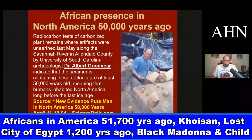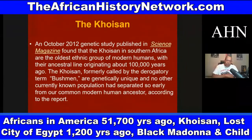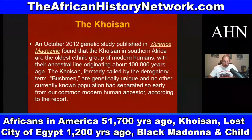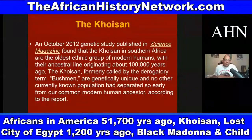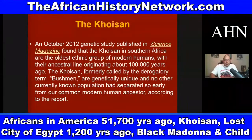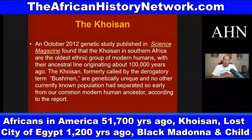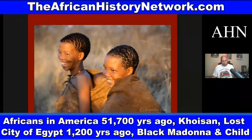These humans are the Khoisan. The Khoisan have the oldest DNA on the planet. They are ancestors related to the Twa — short-statured Africans who went all around the world and were here in the land we call the United States. In October 2012, a genetic study published in Science Magazine found that the Khoisan of Southern Africa are the oldest ethnic group of modern humans, with their ancestral line originating about 100,000 years ago — genetically unique, with no other known population having separated so early from our common modern human ancestor.